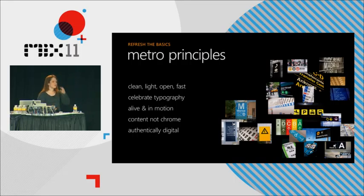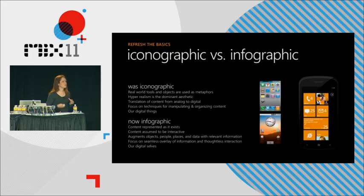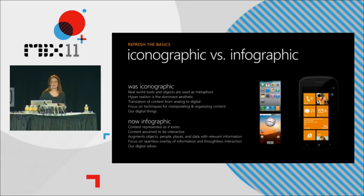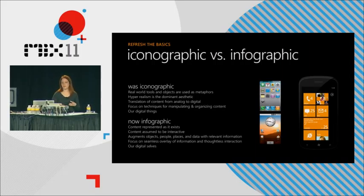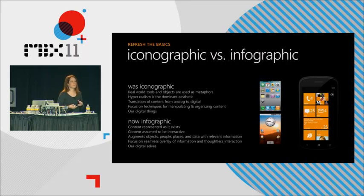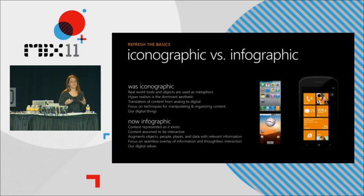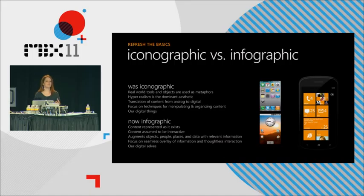The second part of authentically digital that I find really exciting is this notion of content being the pixel — shifting from a very iconographic approach to UI design where we used real-world metaphors and built those into our digital objects, trying to make a hyper-realistic effect. The content was being translated from its analog state into a digital state, and our UI operating systems had to provide the tools to manipulate that content. With Metro and the Windows Phone OS, we wanted to shift that and make it an inspiration based upon the objects themselves — the people, the music, the photos, the places we like to visit — and build that into the system as an inherent part of the UI. That shifted us into a more infographic approach to design.